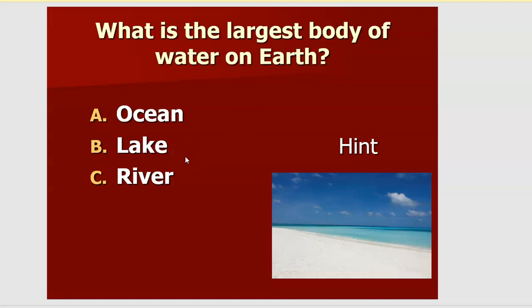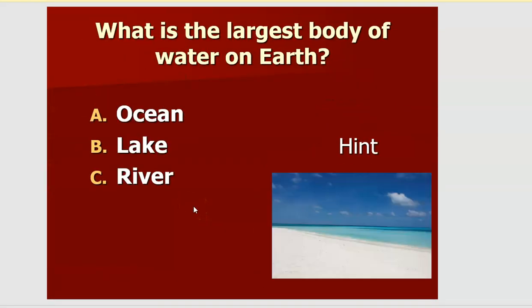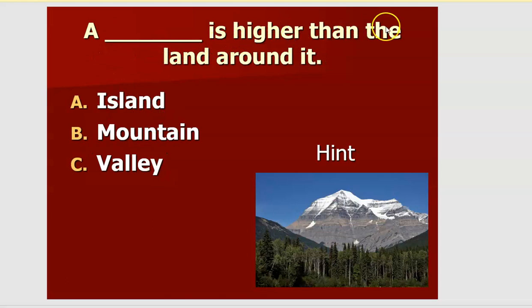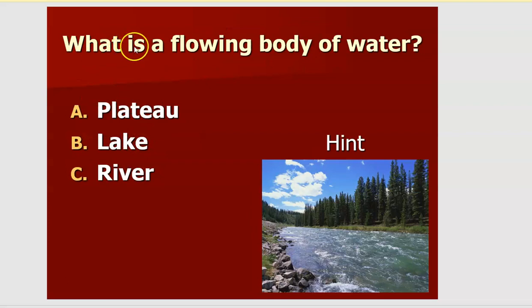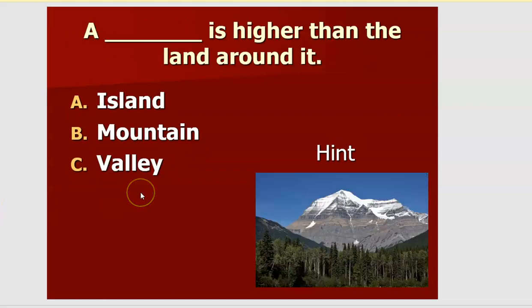Oceans are the largest bodies of water on earth. Next: blank is higher than the land around it — yes, it is a mountain. What is the flowing body of water called? Yes, it's a river. I am land but I have water all around me — what am I? Yes, I am an island!